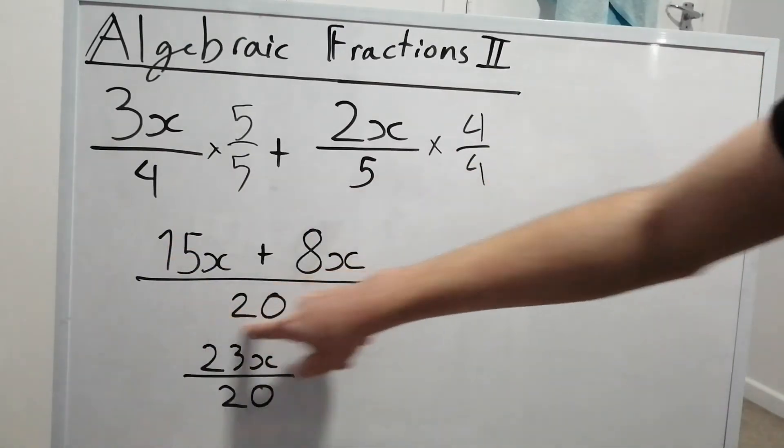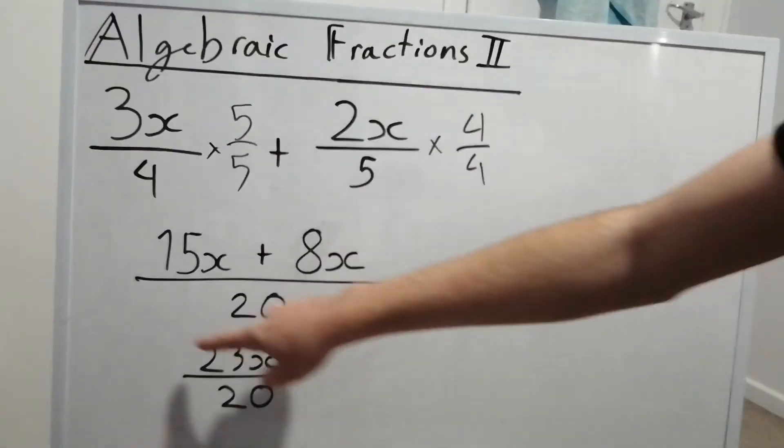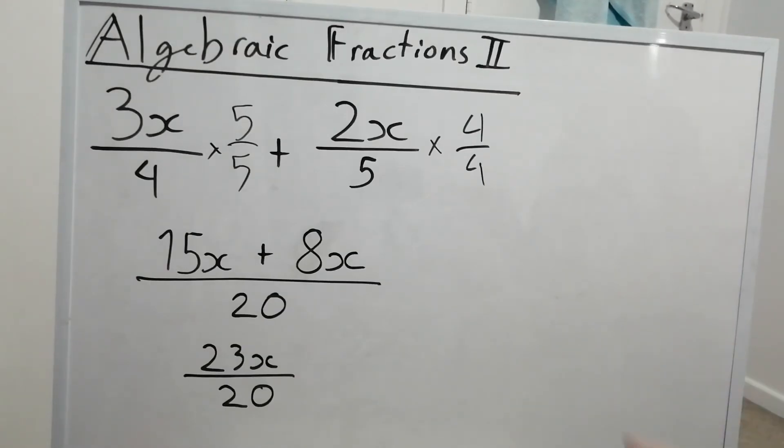So everything works out. We've got the 20 at the bottom, 15x plus 8x, or 23x over 20. And that's a very simple way of how you would solve these in general.